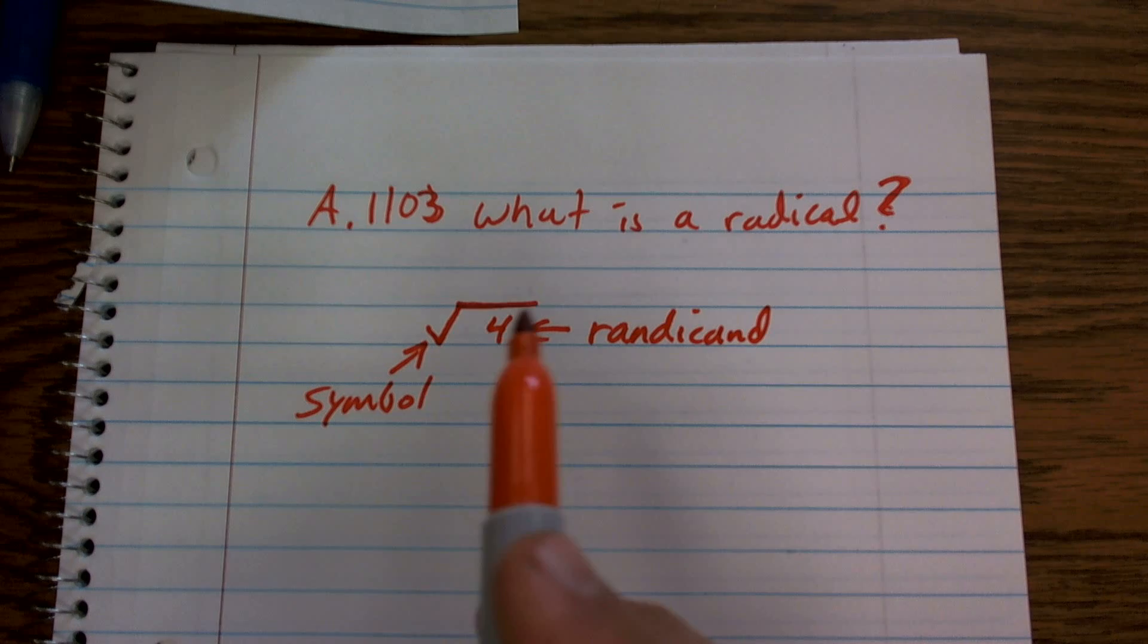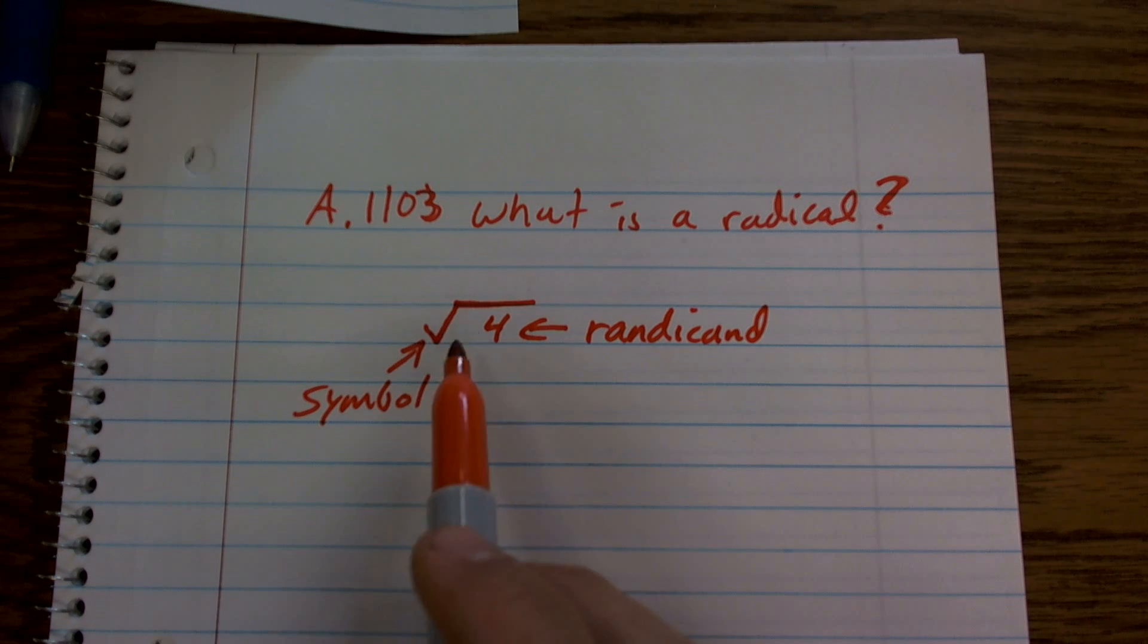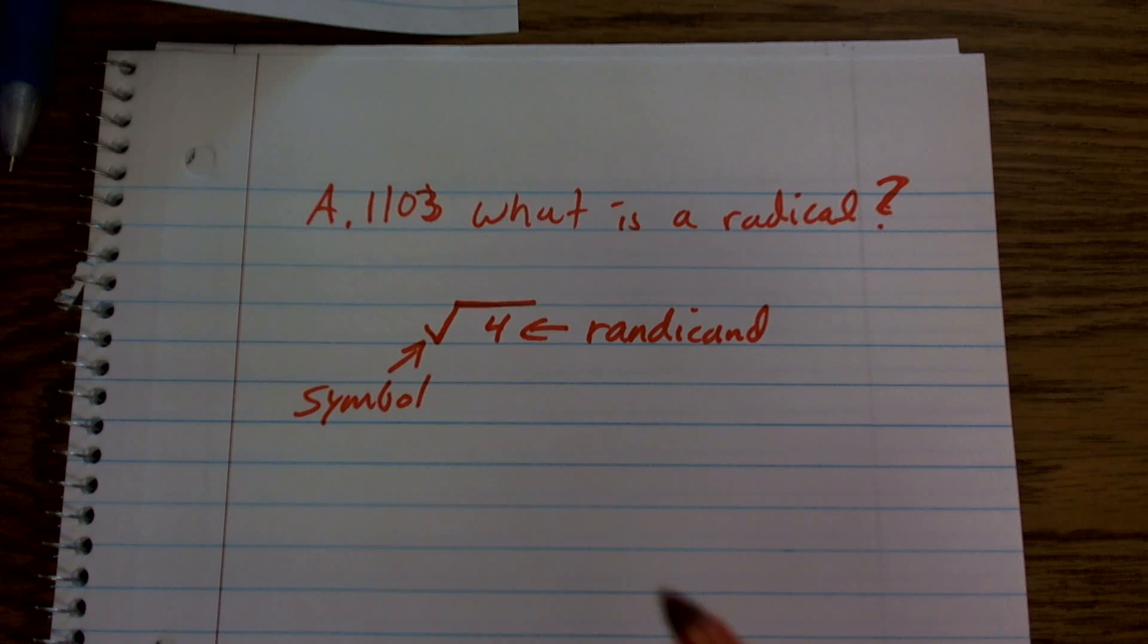So what we mean by dealing with the square root, when there's not a square root, what that just represents is what number multiplied by itself is going to give us 4.